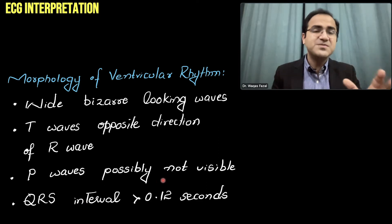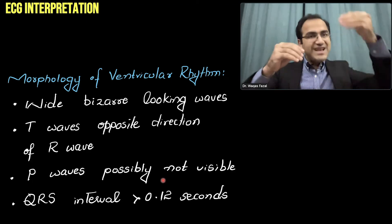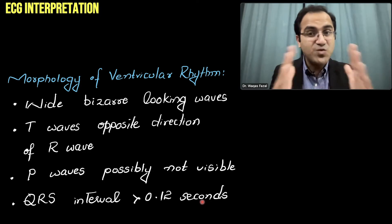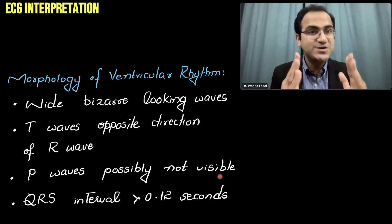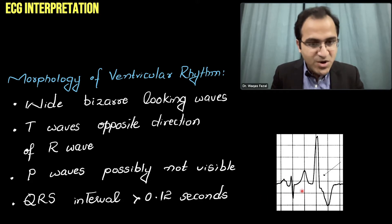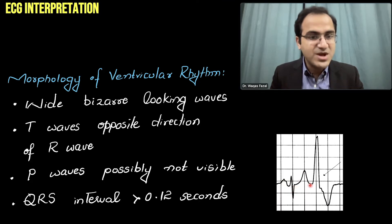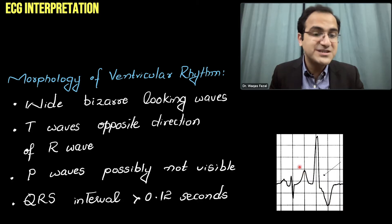The P waves will possibly not be visible — they might be present but hidden by the wide ventricular rhythm waves. The QRS interval will be greater than 0.12 seconds, more than three small boxes on ECG. Comparing a normal sinus beat — with its P wave, narrow QRS complex, and T wave — to a ventricular beat: the ventricular beat is a wide bizarre wave with an inverted T wave and no visible P wave.